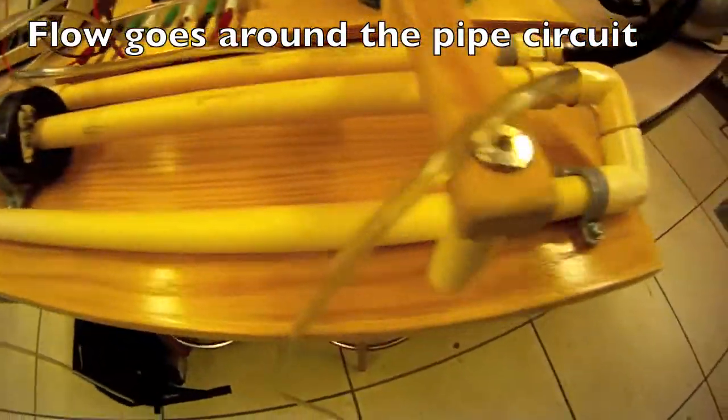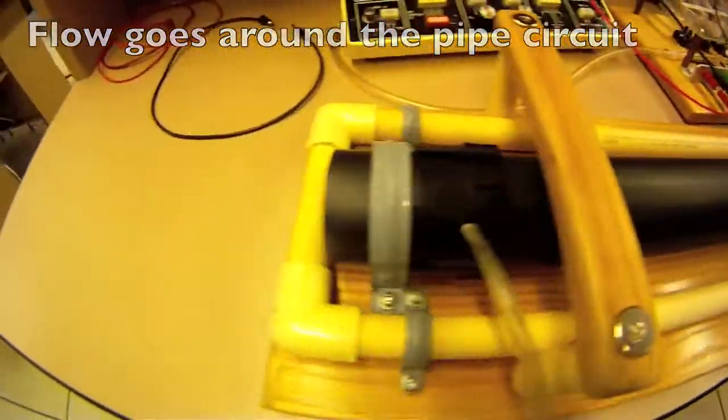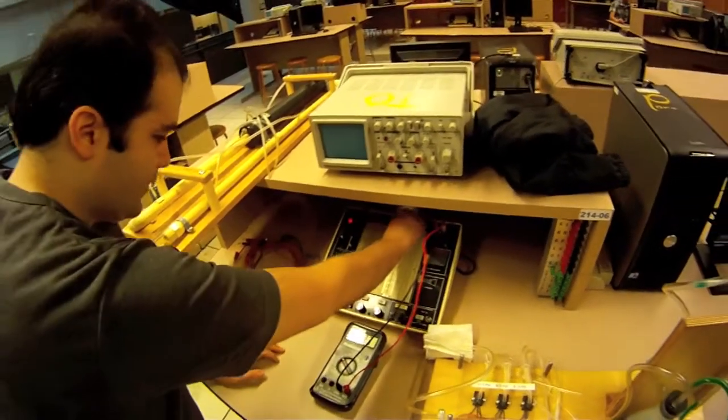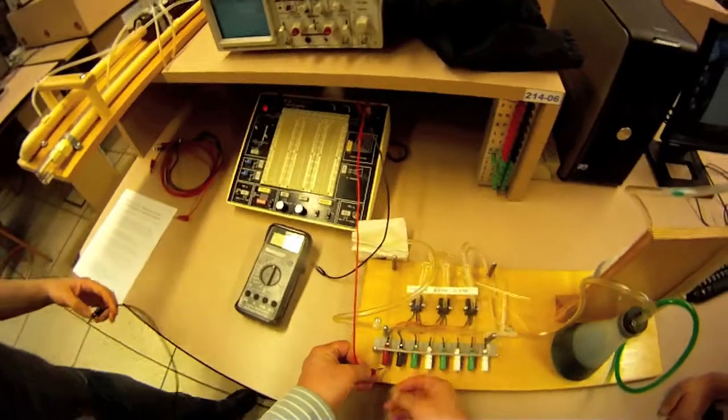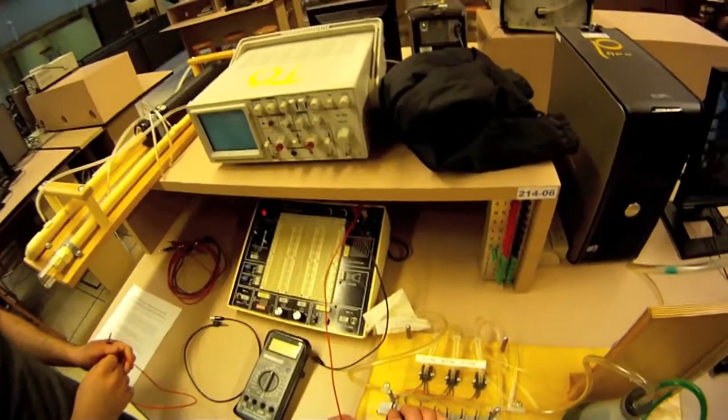Now we'll look at the process for making your measurements. Use the multimeter to make sure the power supply is set to 12 volts. Connect the plus 12 to the red terminal and the ground to the black terminal.